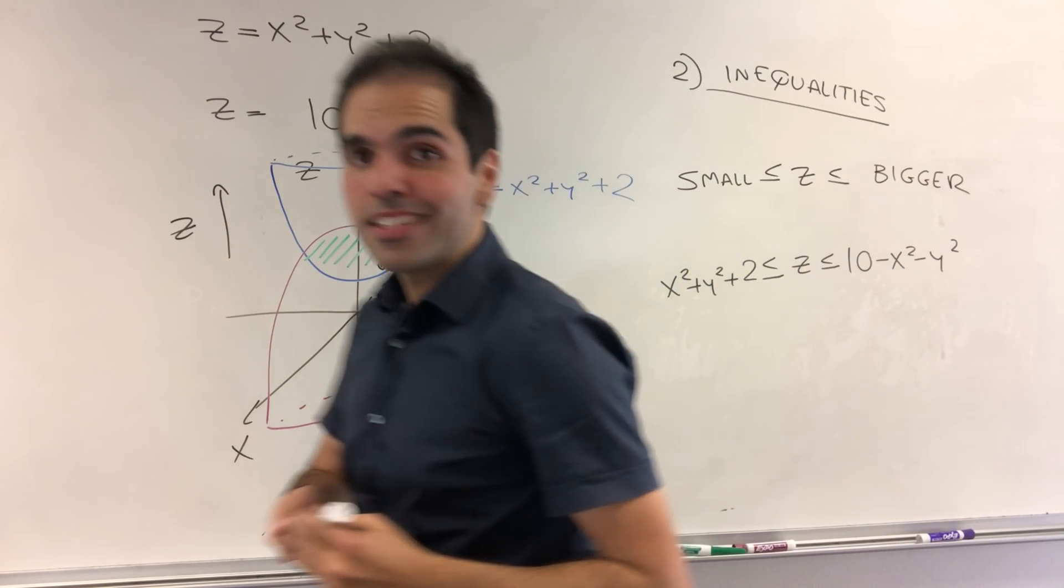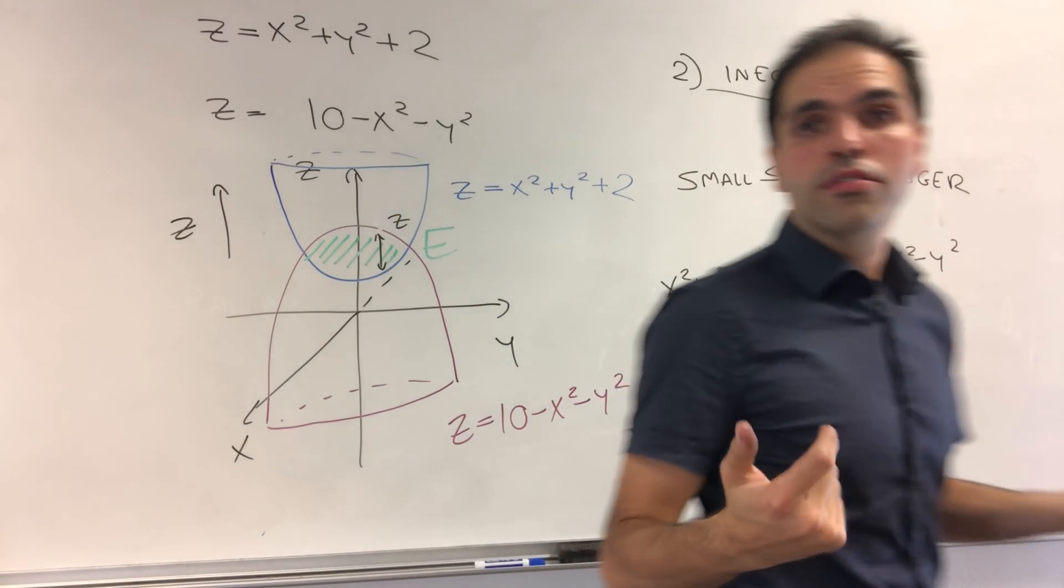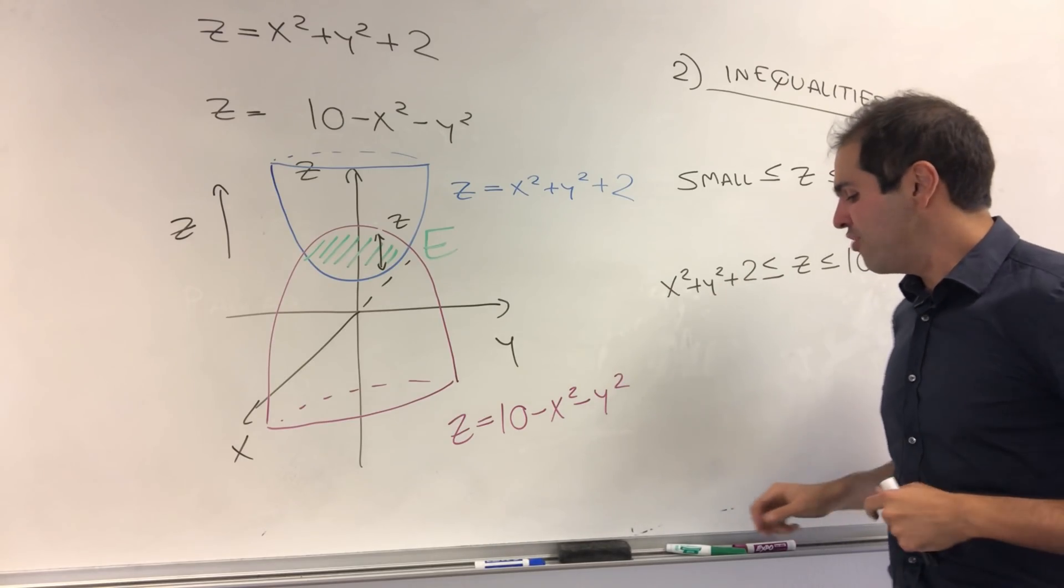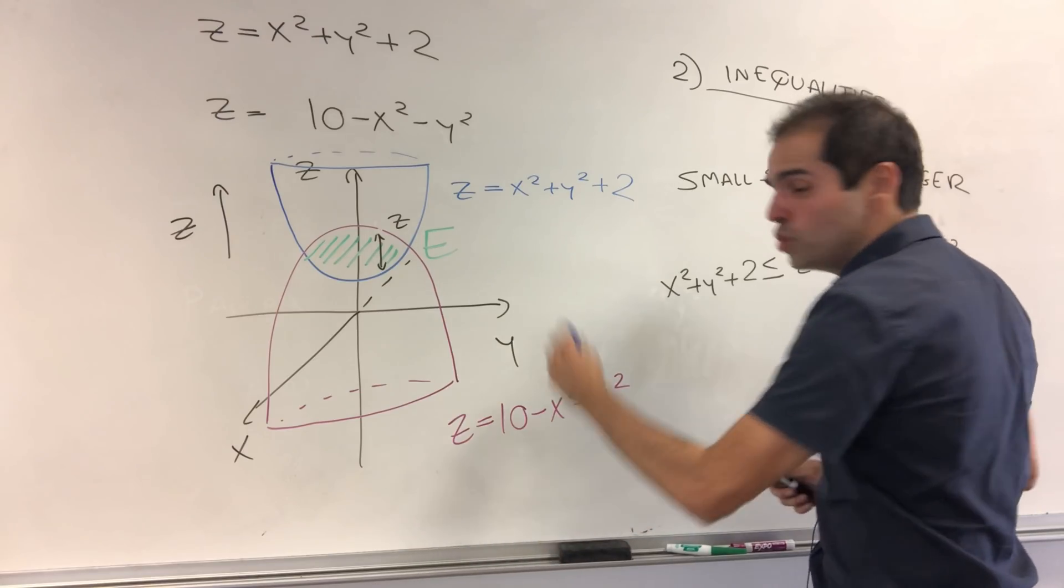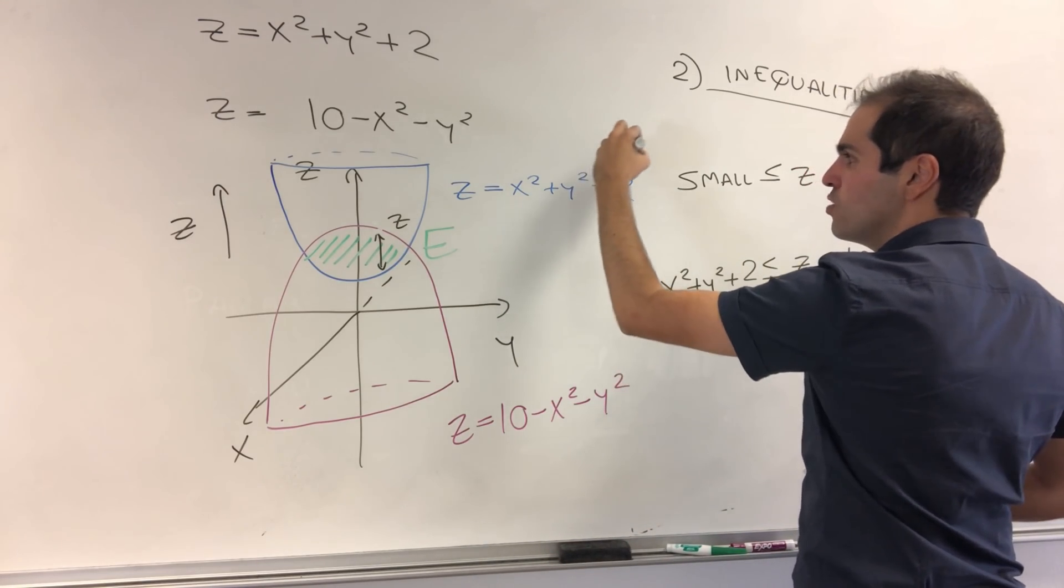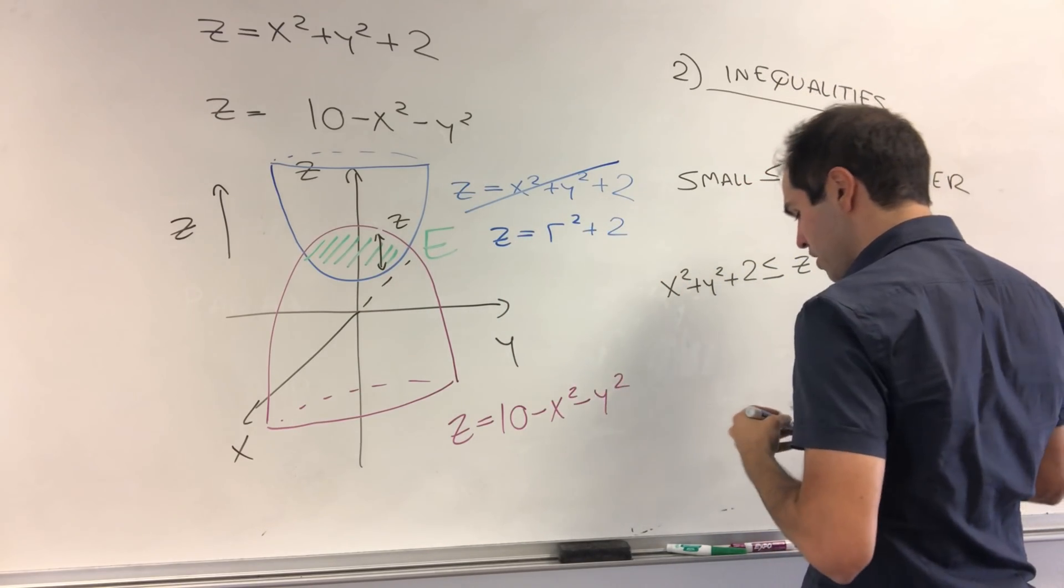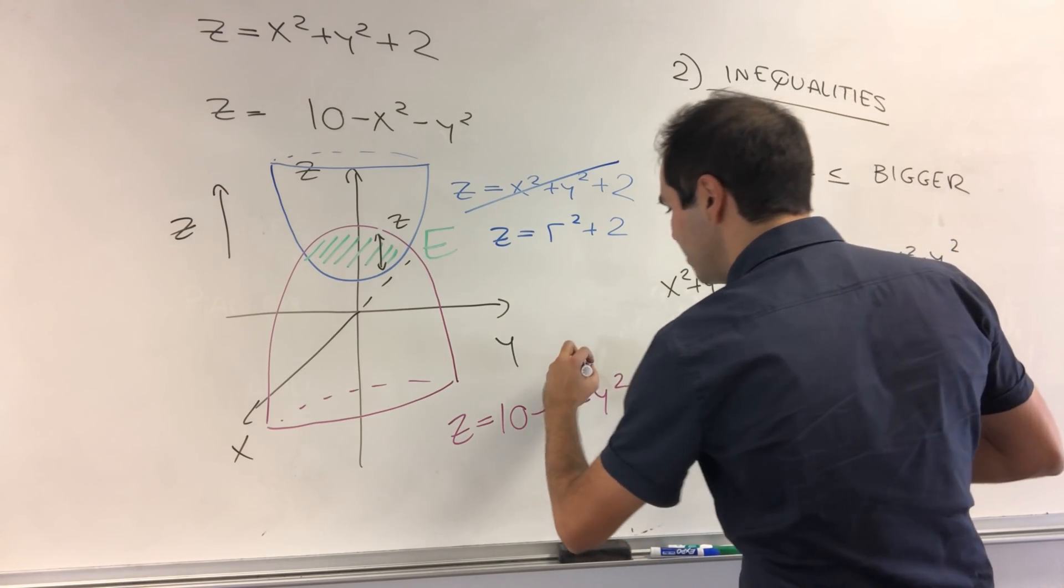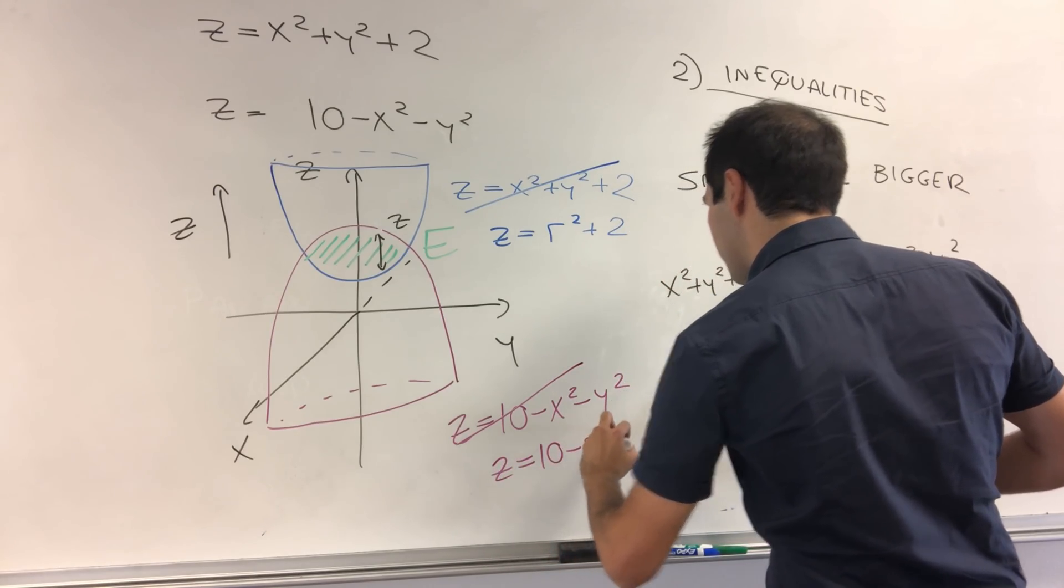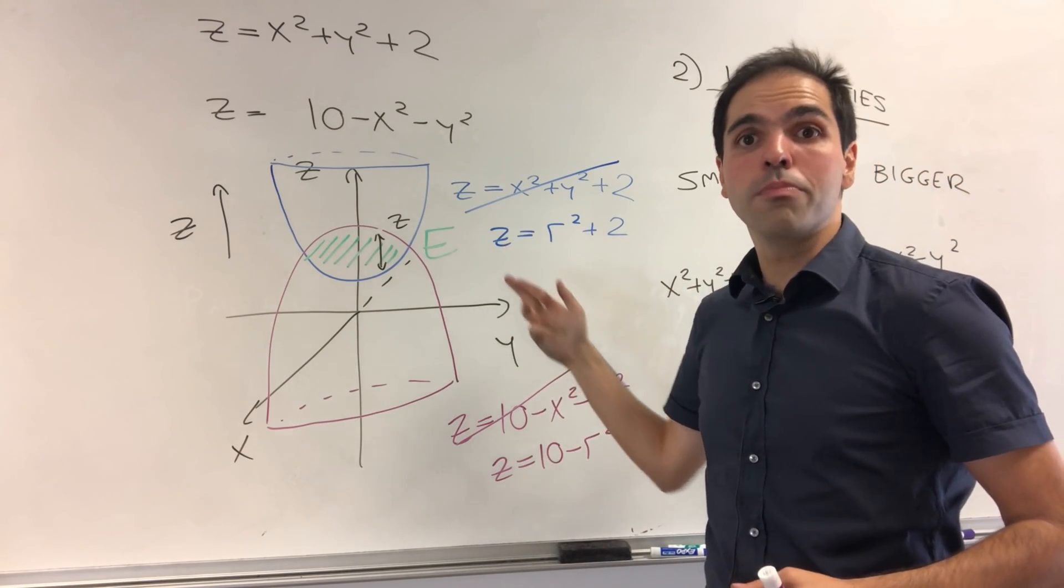Now, I really like this example because it illustrates not only triple integrals, but it also illustrates cylindrical coordinates. So it's super flexible. And in fact, here, let's do it with cylindrical coordinates. Because x squared plus y squared plus 2, that becomes z equals r squared plus 2. And 10 minus x squared minus y squared, that is, z is 10 minus r squared. And that's a point of cylindrical coordinates. It's just to simplify things.